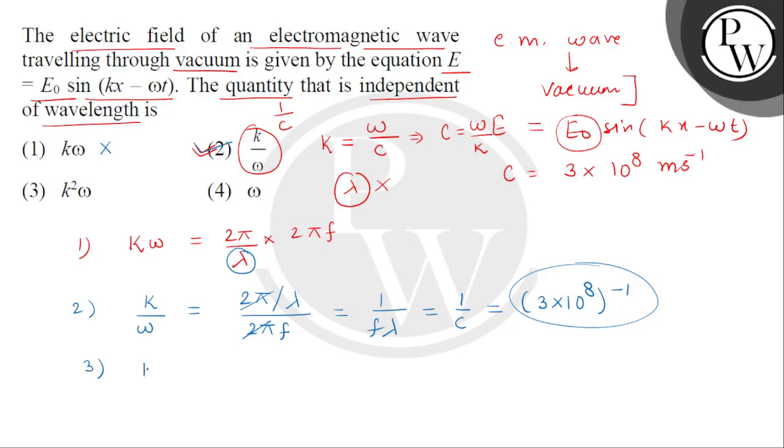Then option number 3, K square omega. इसको हम लिख सकते हैं K omega multiplied by K. तो हमें option 1 से K omega का product मिला था. 4 pi square f divided by lambda and again K will be 2 pi divided by lambda. तो third option lambda square से inverse है. So, this is also incorrect.